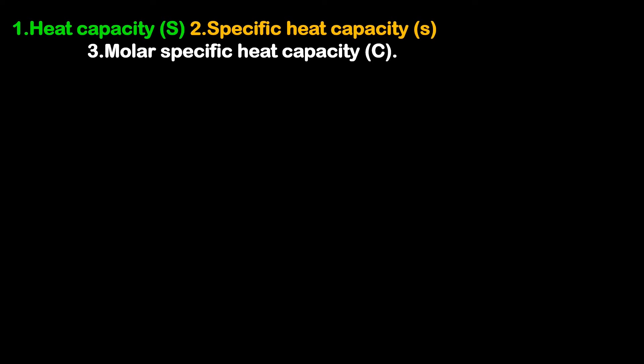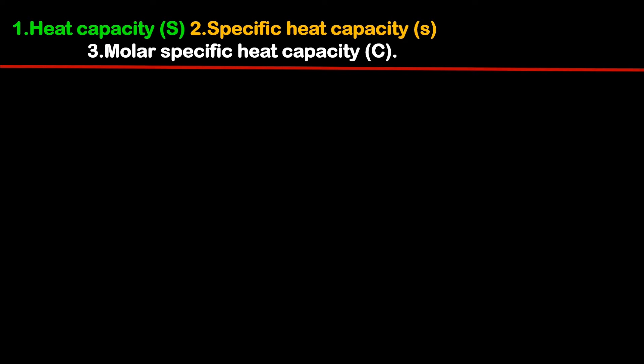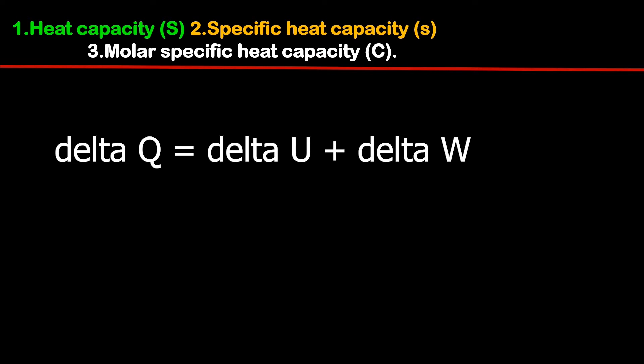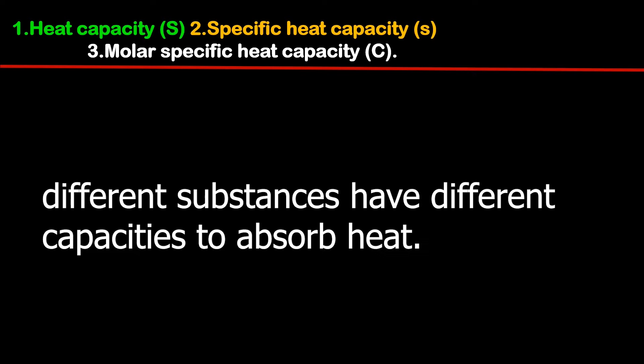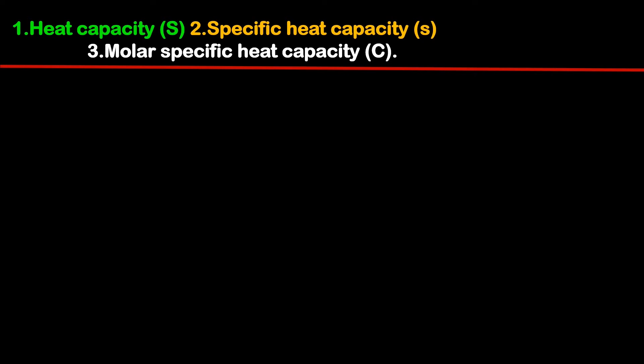We will discuss heat capacity (capital S), specific heat capacity (small s), and molar specific heat capacity (capital C). Why should we understand these topics? As per the first law of thermodynamics, when a certain amount of heat is supplied to a system, the system utilizes that heat energy to increase its internal energy and also do work. Different substances have different capacities to absorb heat.